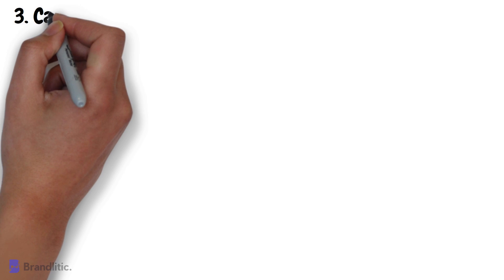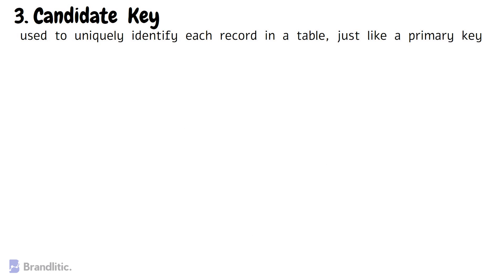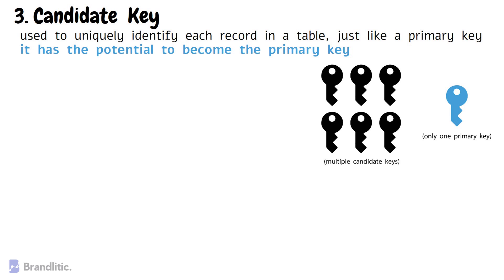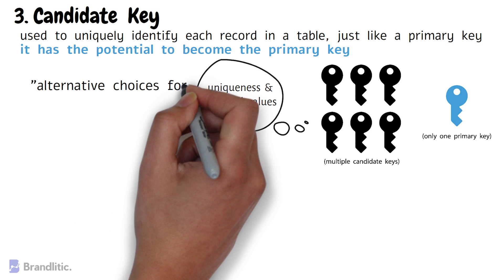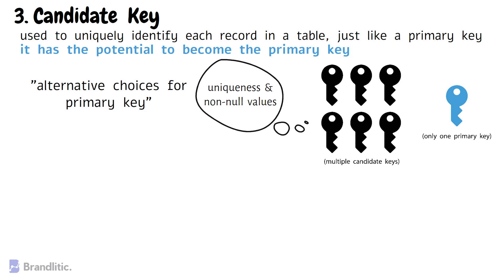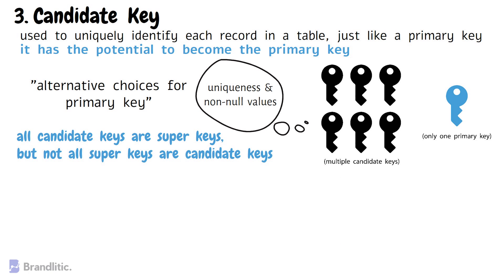Next: what is a candidate key? A candidate key is a column or a set of columns that can be used to uniquely identify each record in a table, just like a primary key. It's called a candidate key because it has the potential to become the primary key of the table. A table can have multiple candidate keys, but only one of them will be chosen as the primary key. Each candidate key must satisfy two important conditions: uniqueness and non-null values. Candidate keys are significant in database design because they provide alternative choices for the primary key.